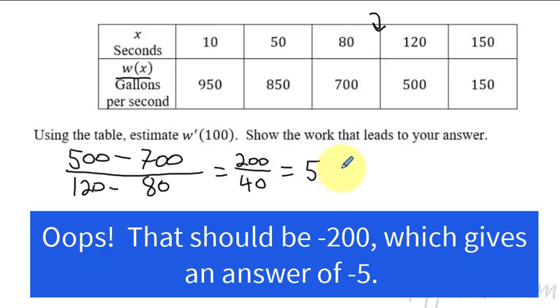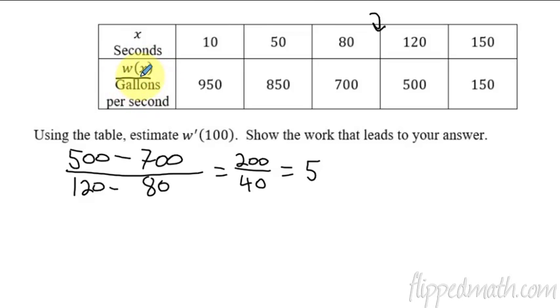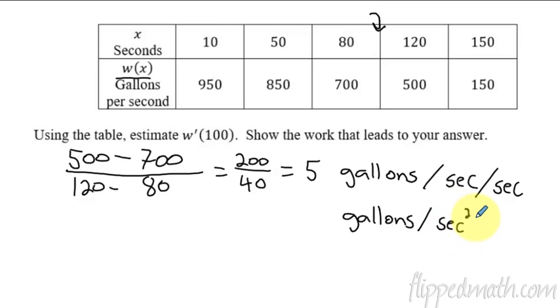Now, the reason I have this one on here is because the units are different. Notice that W of X is already a rate of change. It's gallons per second. So I'm going to have gallons per second per second because I have it this per this second. Okay. So gallons per second per second. Those of you who have had physics, this is going to be a little bit familiar or the easiest way of writing this would just be gallons per, and then you can just say second squared. That's a lot easier to say your units. Okay. So just pay attention to the units. If it's gallons per second per second, you can write it as per second squared.